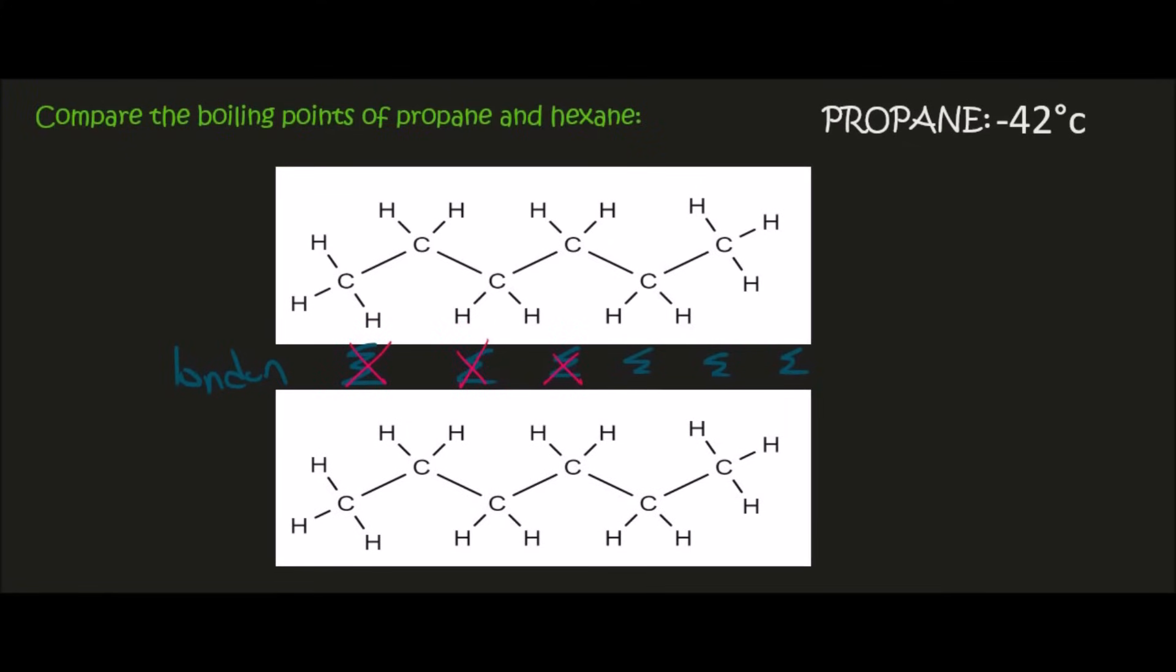And a whole lot more compared to propane, which only has three carbons. So due to the fact that there'll be more forces that you need to overcome to separate molecules of hexane, this means that the boiling point of hexane will be higher.